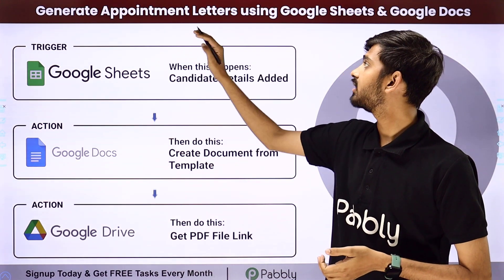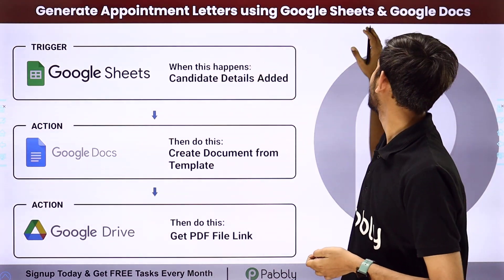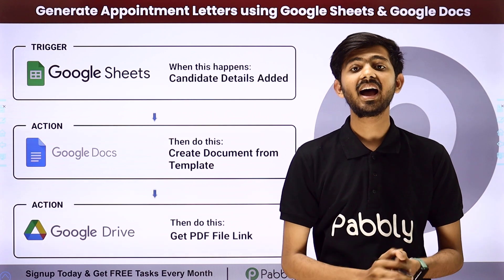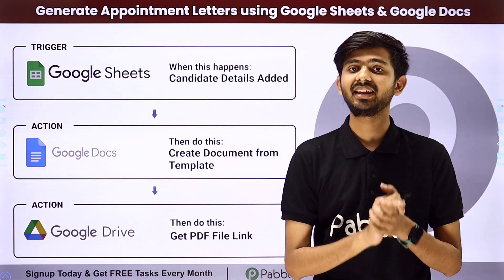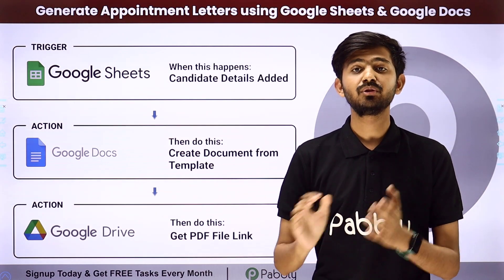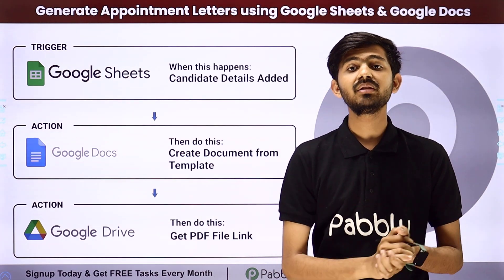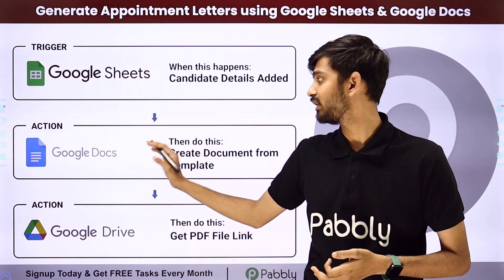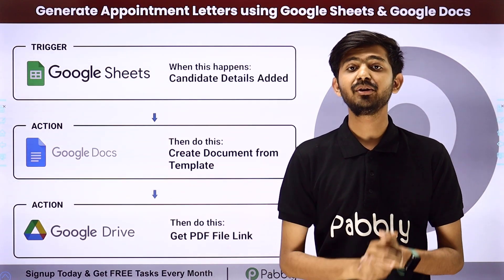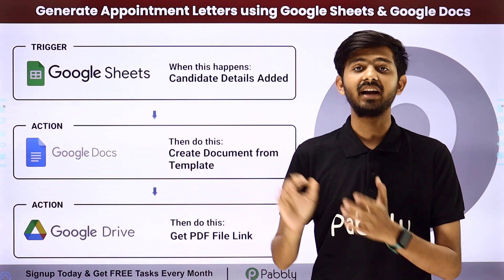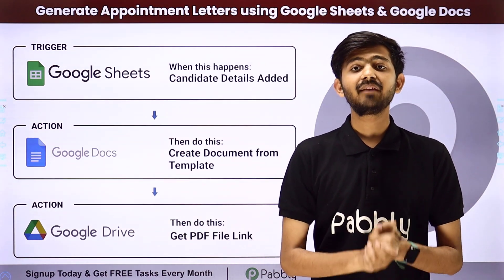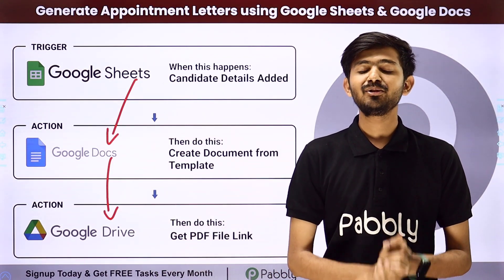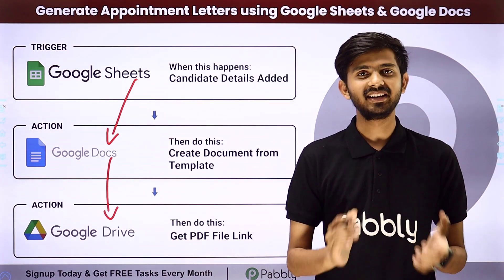Hello everyone. Today our topic is how to generate appointment letters using Google Sheets and Google Docs. I am an HR and I want to automate this process of onboarding candidates. For that, I automatically want to generate appointment letters for all my candidates. Whenever I add candidate details in my Google Sheet, I'll use those details to create a new appointment letter using a template in Google Docs. For building this connection, I'm going to use Pabbly Connect, which is an amazing software for automation and integration.